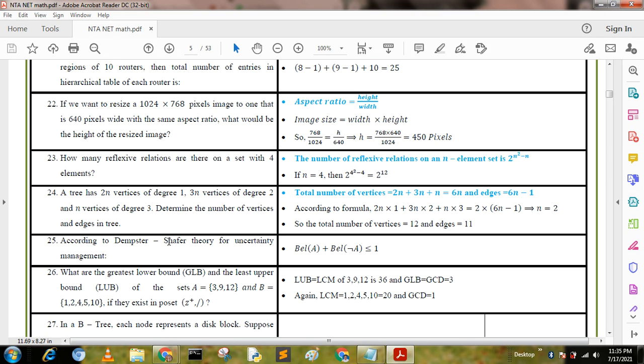According to Dempster-Shafer theory for uncertainty management: Bel(A) plus Bel(not A) less than or equal to 1.